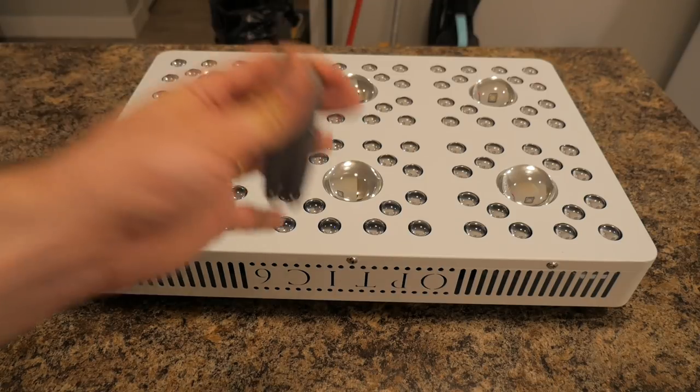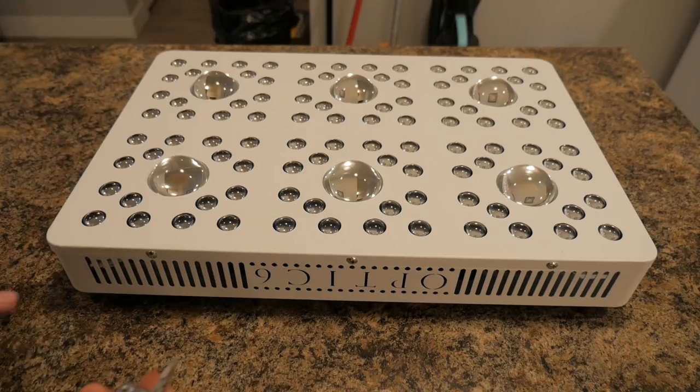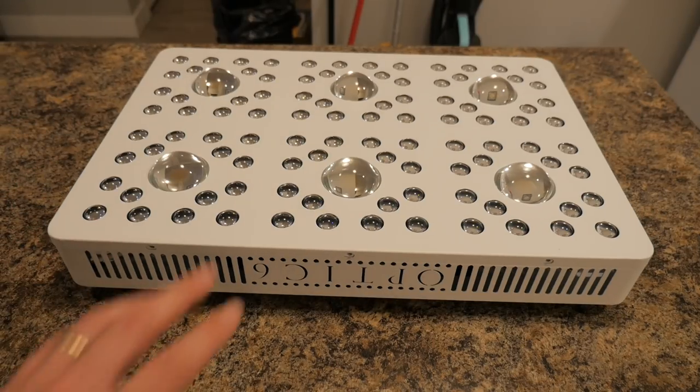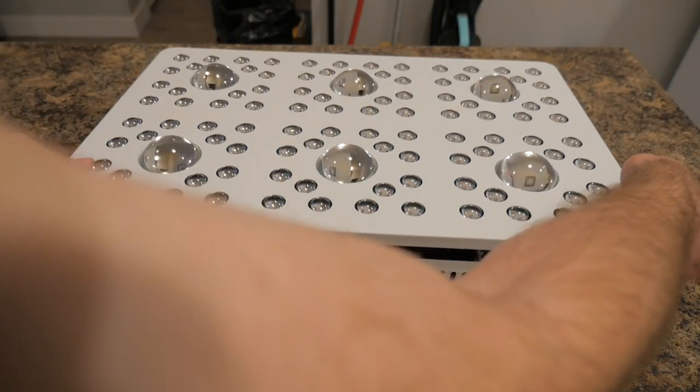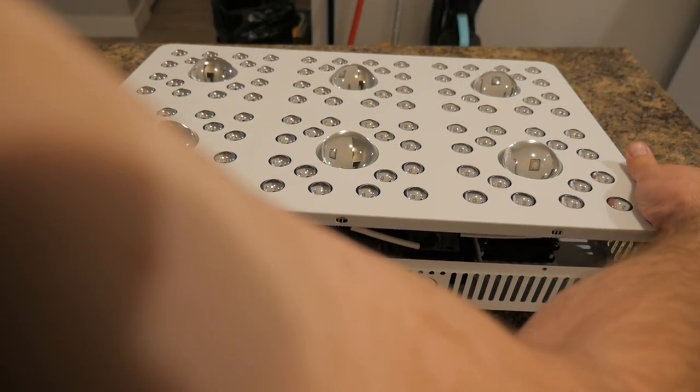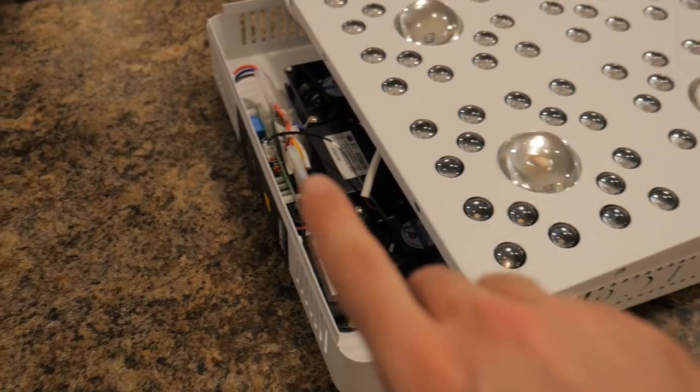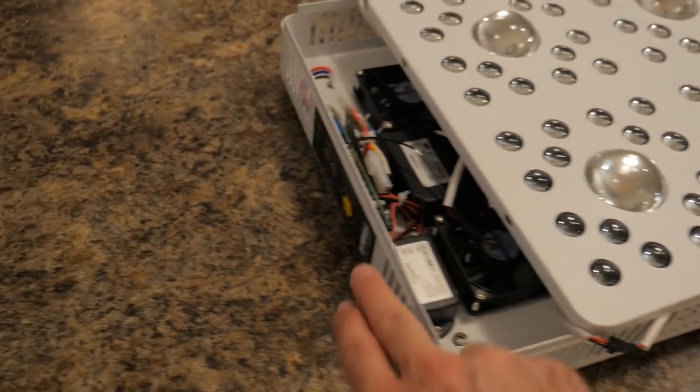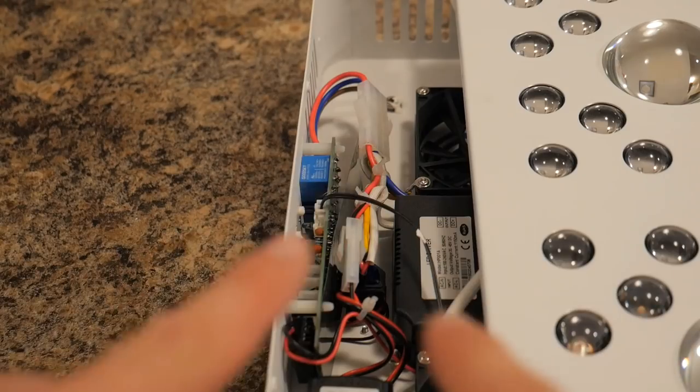Alright first things first, you're going to need a screwdriver and I'm going to take out the screws all around the side and pop open this top. Alright I just unscrewed all the screws here with the screwdriver and now we should be able to just pop this open. What we need to work on is over on this side where the control panel is - this is the piece we need to take out and replace.